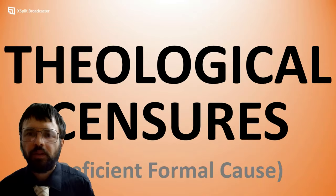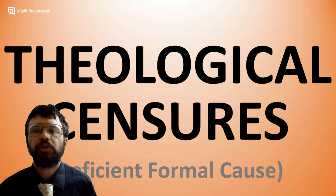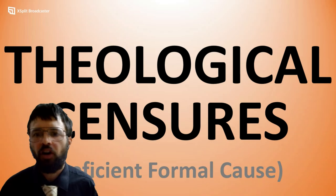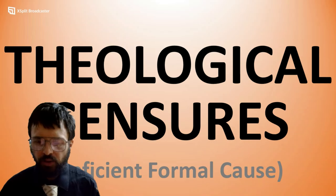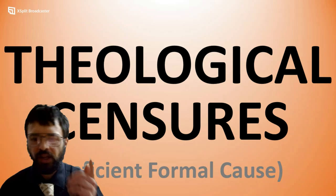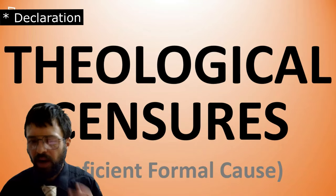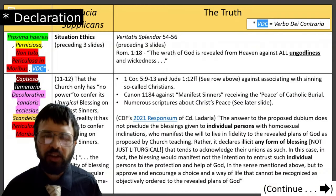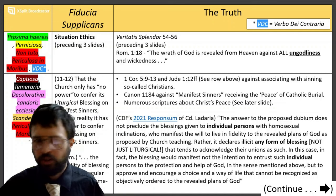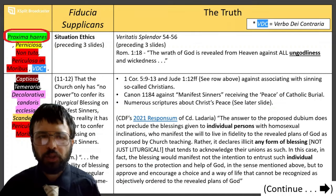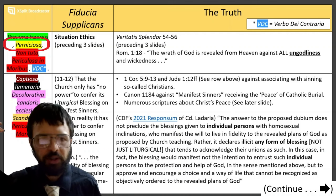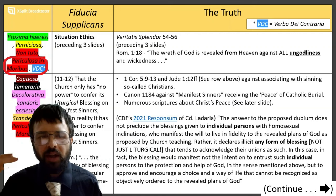Now that we've covered situation ethics and found it in Fiducia Supplicans, we can move more broadly to all of the other problems in Fiducia Supplicans. First, theological censures — and this is going to constitute its formal cause. The first theological censure is, of course, situation ethics itself. That's going to be close to heresy, pernicious — which means everywhere, commonly used today — not safe, and dangerous to morals. And then lastly, it's VDC — verbo Dei contraria — against the word of God.